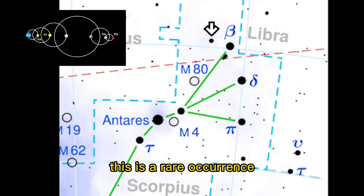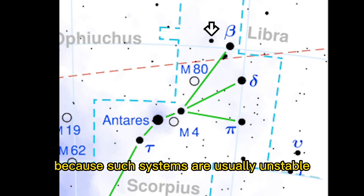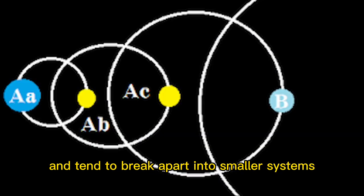This is a rare occurrence because such systems are usually unstable and tend to break apart into smaller systems.